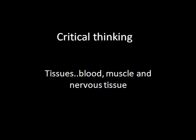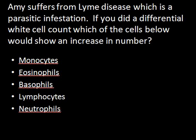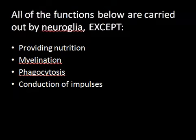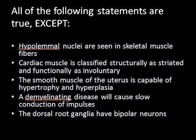This is critical thinking on the second class of tissues — blood, muscle, and nervous tissue. Here are three different kinds of questions, and I'll show you how you should answer them. This first one is a clinical problem. The second involves functions of cells, and by the process of elimination you choose the correct answer. The third is a question where you have to pick the incorrect statement, so you must know your material really well.